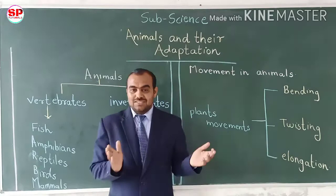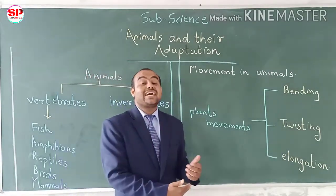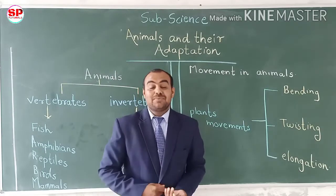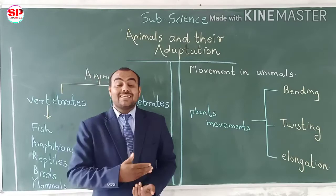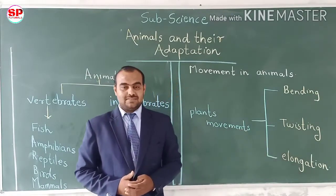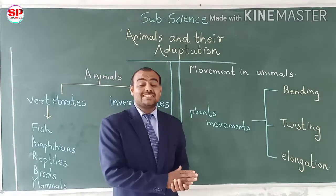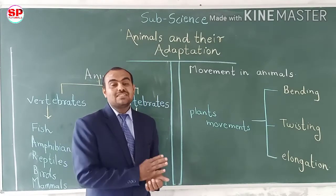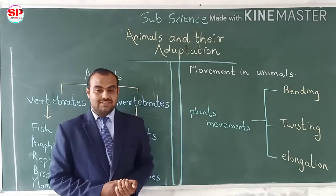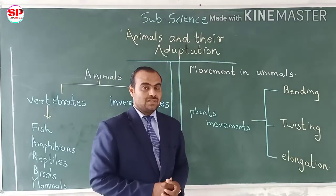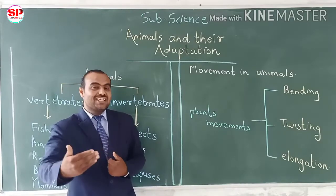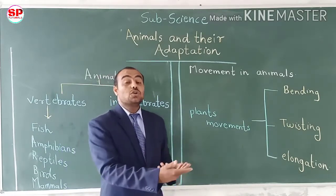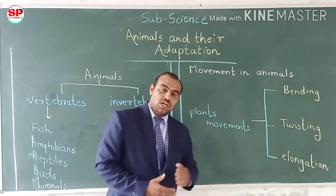Both types of animals show the characteristics of living organisms — they respire, they reproduce, and they move from one place to another. The movement of animals from one place to another place is called locomotion. Locomotion means to move from one place to the other place.